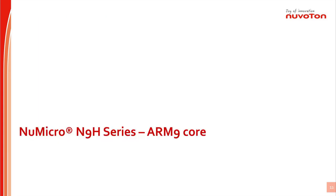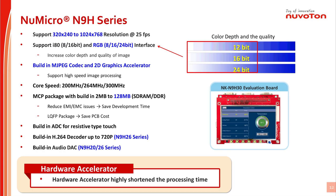Nuvoton N9H series is based on ARM9 core. N9H series contains three sub-series: N9H20 at 200 MHz, N9H26 at 264 MHz, and N9H30 at 300 MHz core speed. Here I want to emphasize three key points. First, this series uses multi-chip package technology to build in from 2 MB to 128 MB SDRAM DDR memory, which could reduce the EMI effect and shorten the product development time.